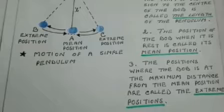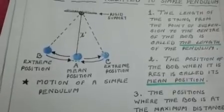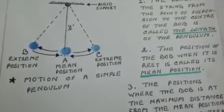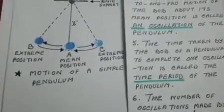The positions where the bob is at the maximum distance from the mean position are called extreme positions. In the figure, the positions B and C are the extreme positions of the bob.